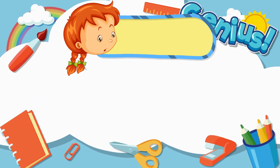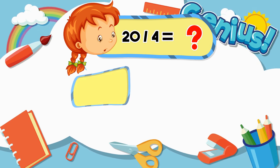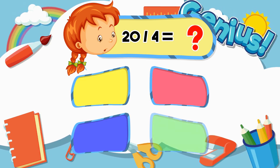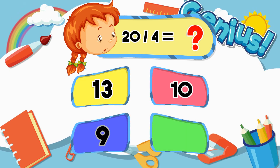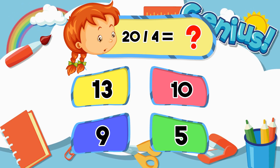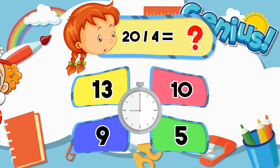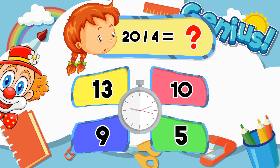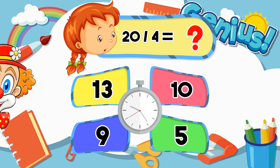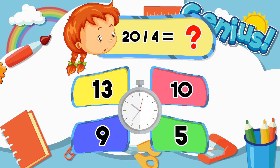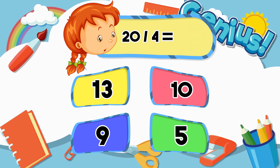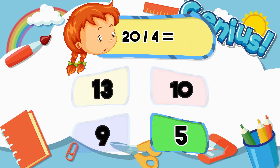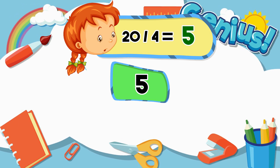What is 20 divided by 4? 13, 10, 9, 5. 5.